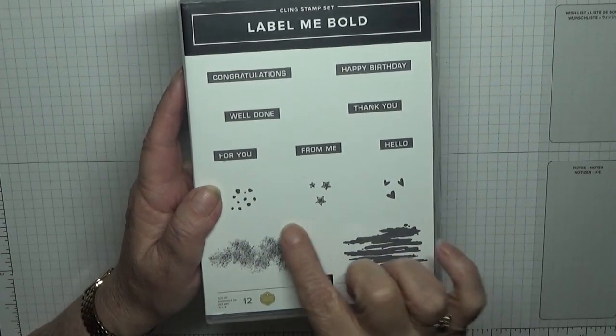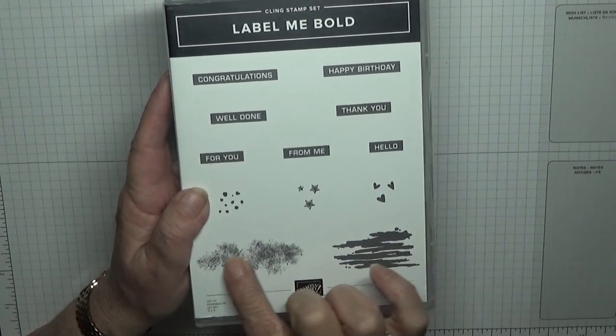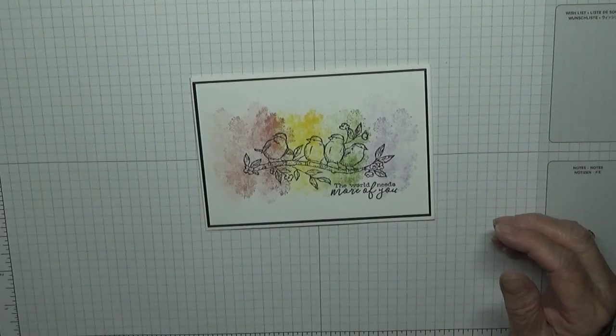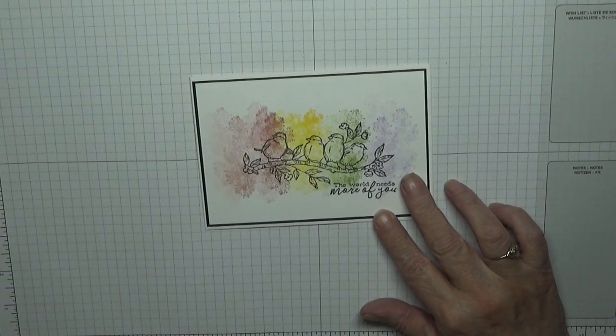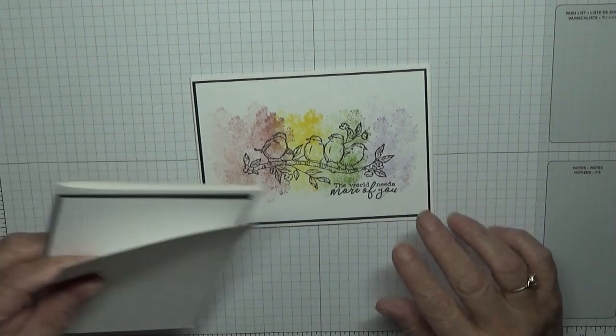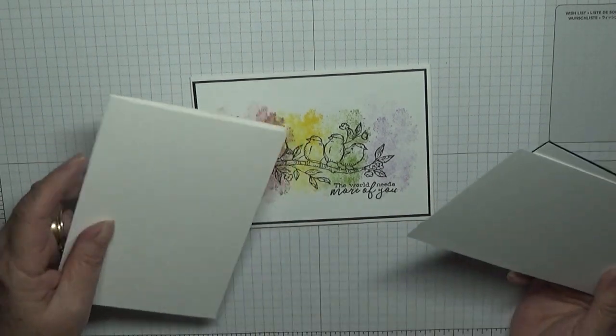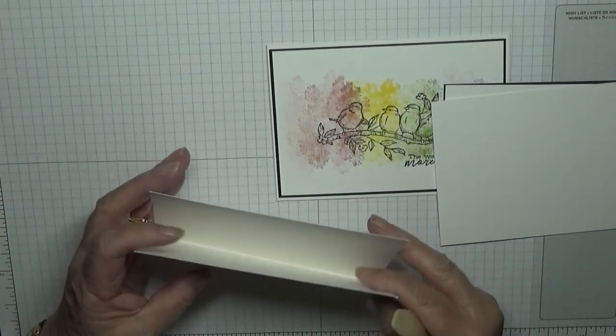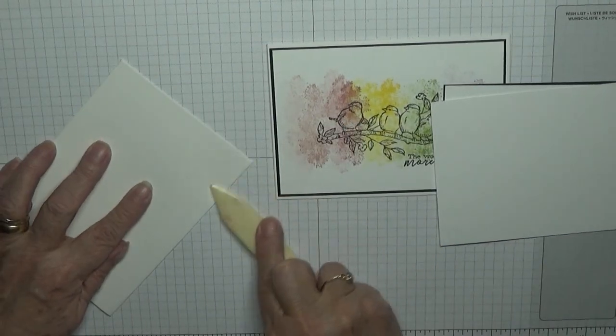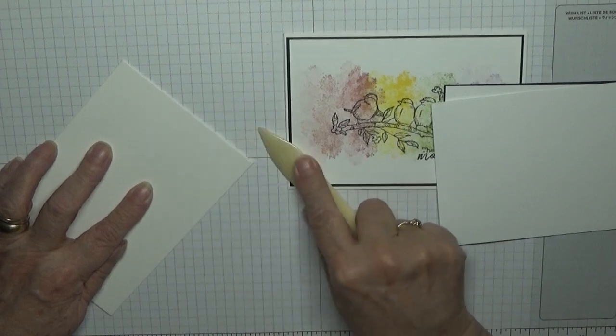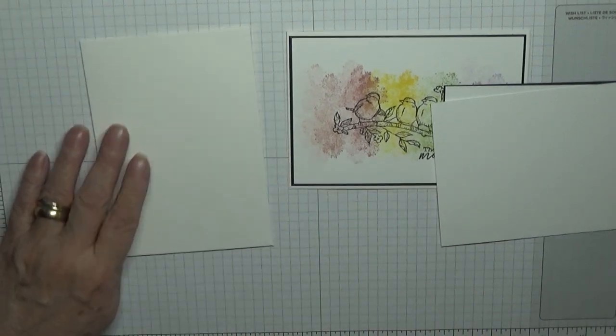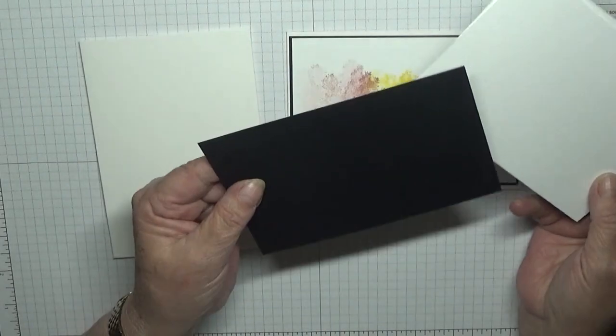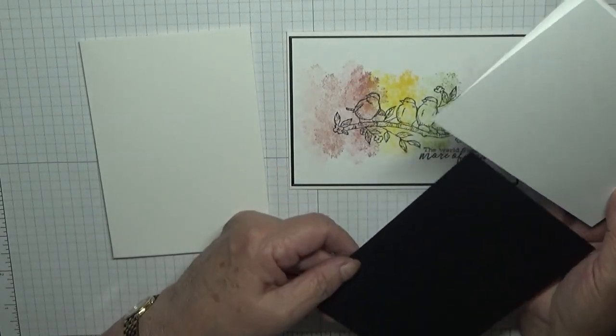We're going to use Label Me Bold and we're going to be using this image. For the papers you need, I've got a card blank of 8 and a quarter by 5 and 7/8, folded and burnished at 4 and 1/8. I have a black card base of 5 and 5/8 by 3 and 7/8.